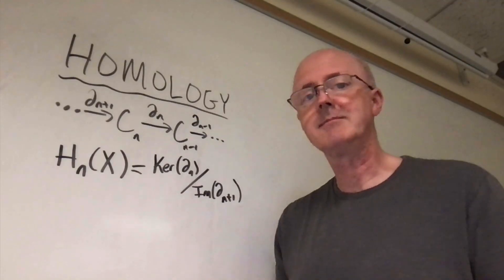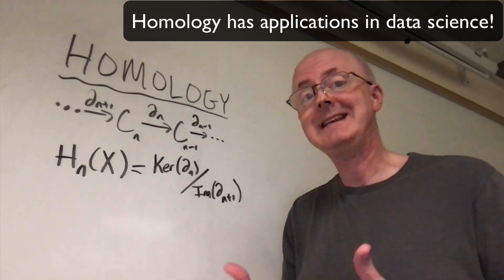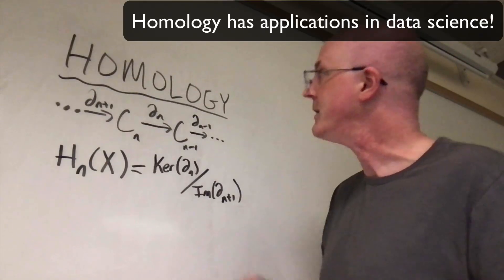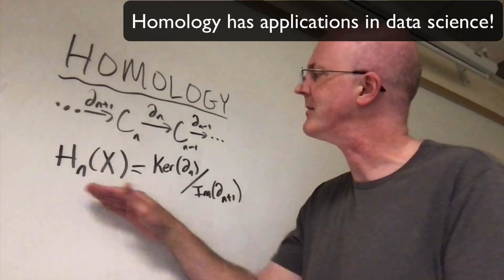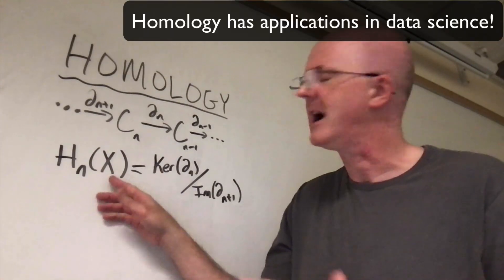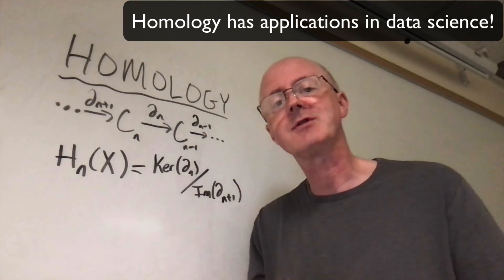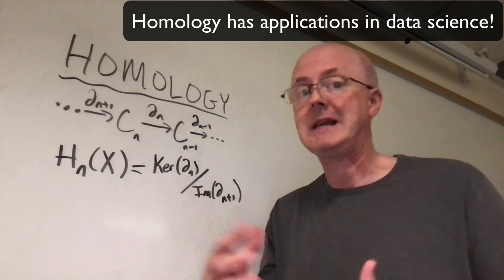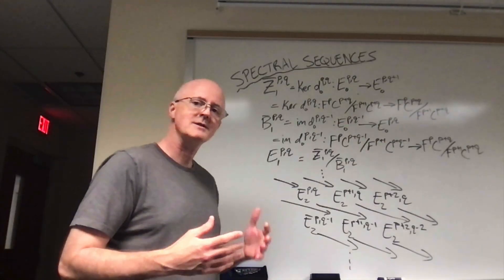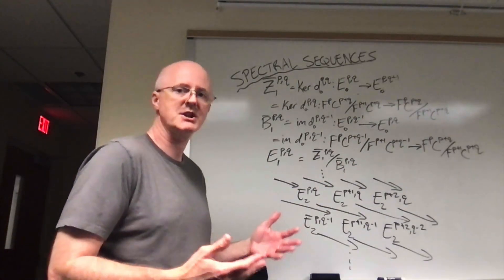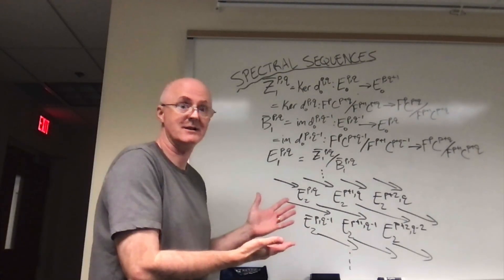Getting into a little bit more detail, homology is an example of a subject within algebraic topology where you form essentially infinite chains of groups, and then take those groups and form what are called homology groups of a given space X. This homology group tells you information about the space, perhaps how many holes the space has in it of various dimensions. It turns out spectral sequences are actually ways of computing homology groups, but you can see it's much, much more complicated looking.